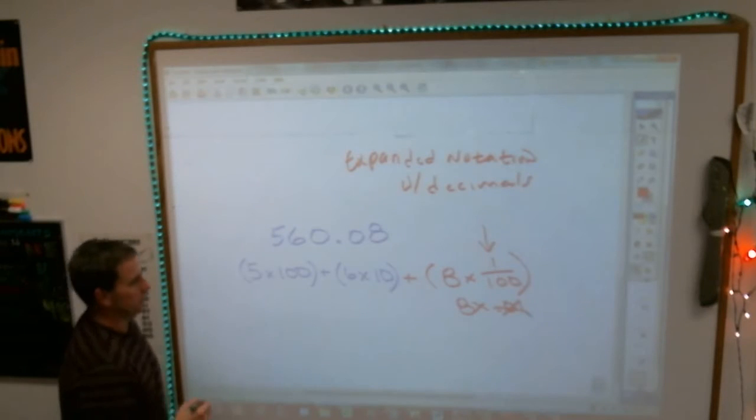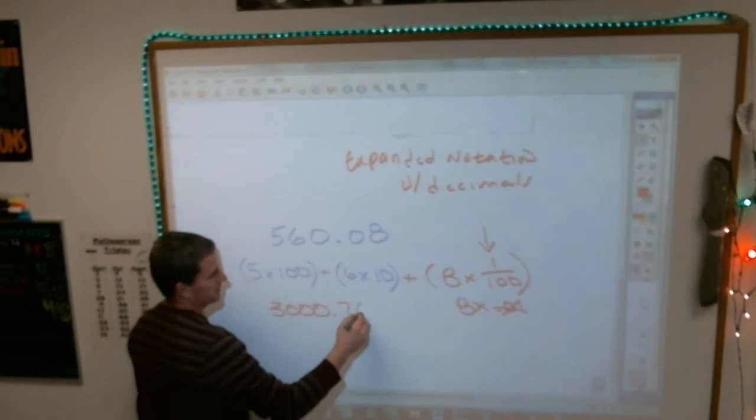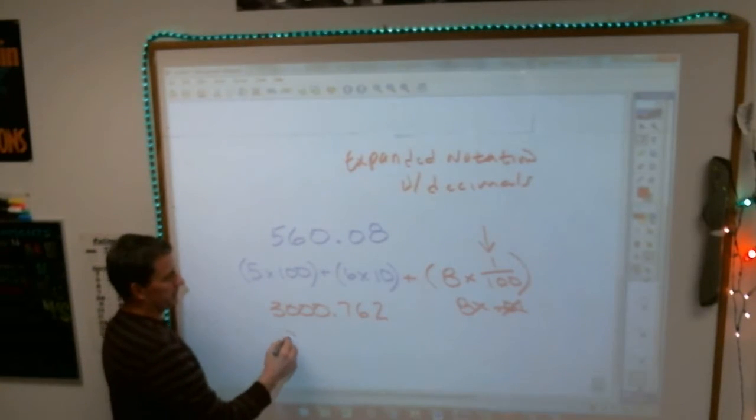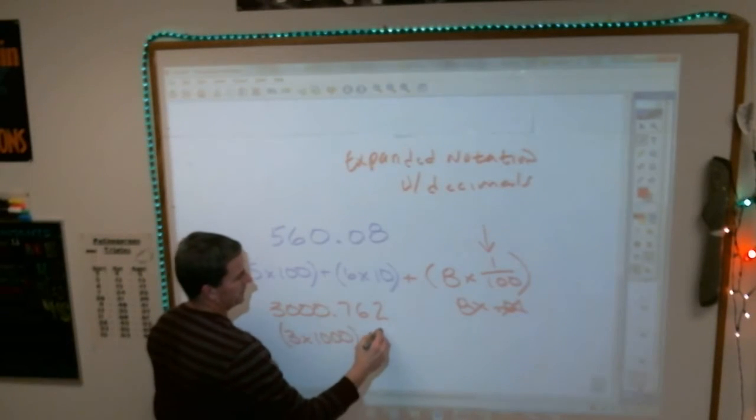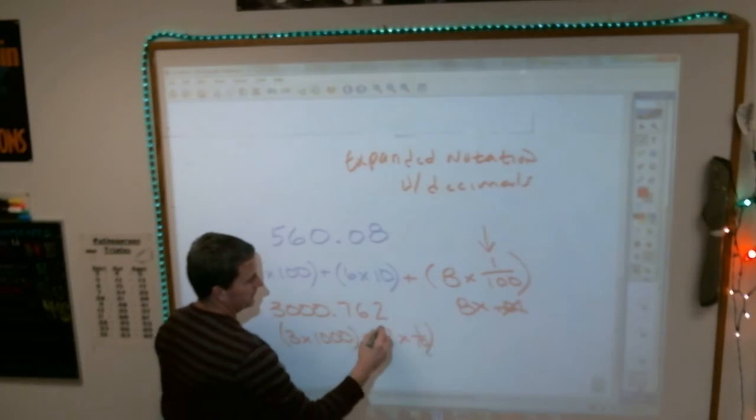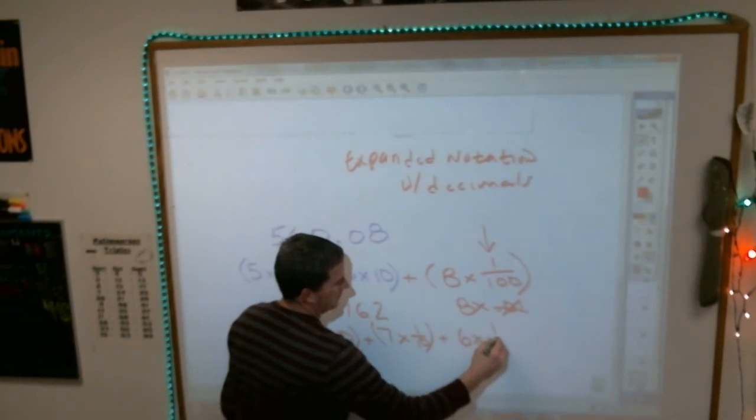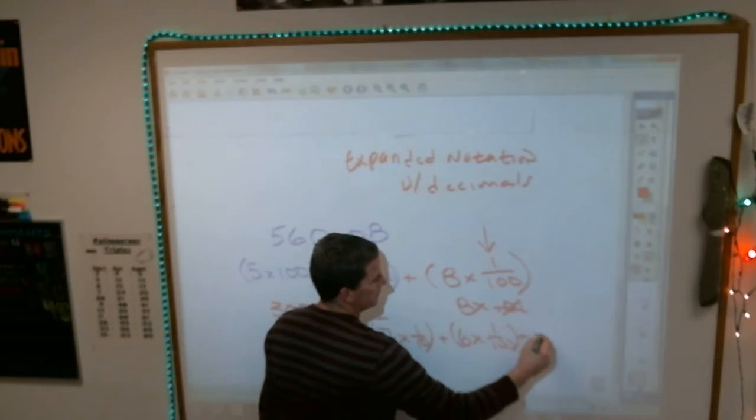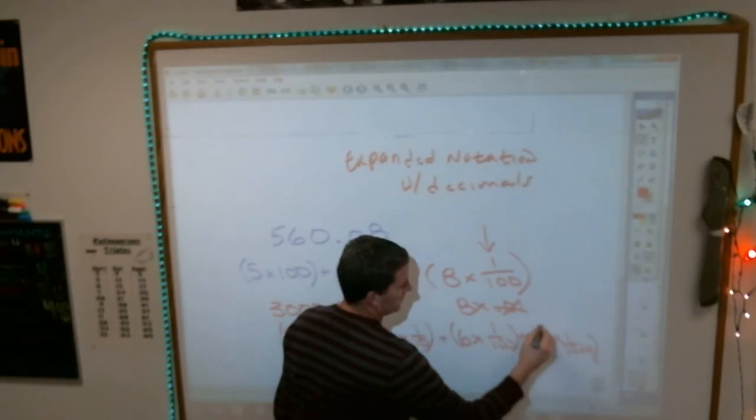I want it to put in the fraction form, whatever it is. So let's say it is 3,000.762. It would look like this. 3 times 1,000 plus a 7 in the tenths place. 7 times 1 tenths, plus 6 times 1 in the hundreds place, plus a 2 in the 1 thousands place.